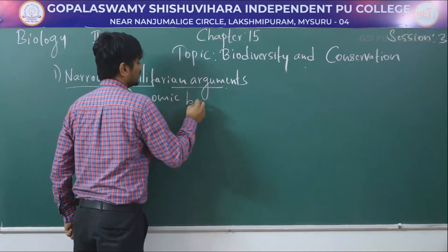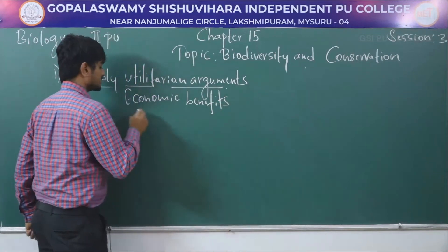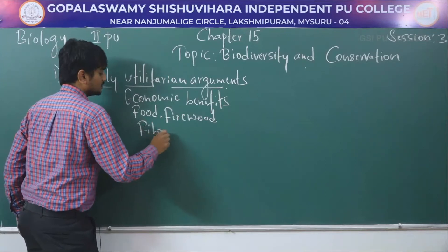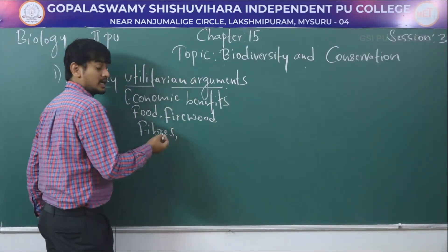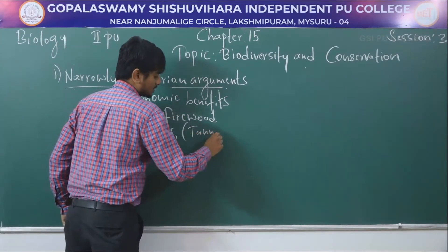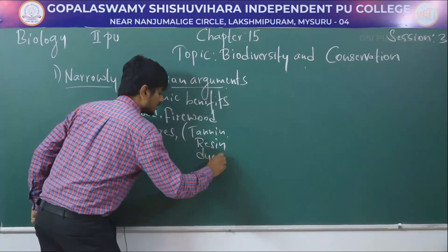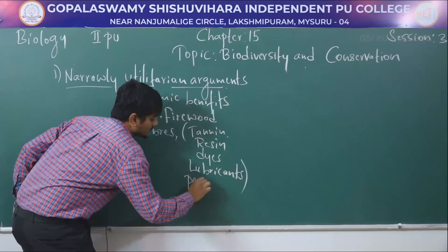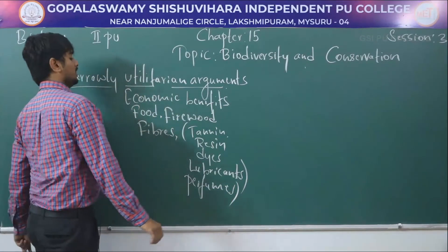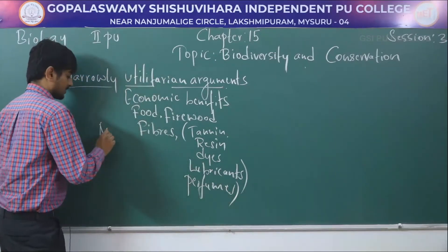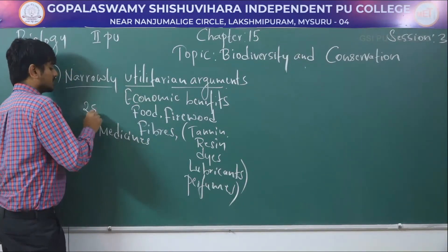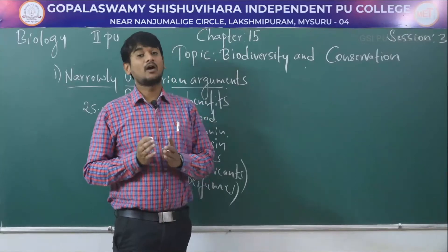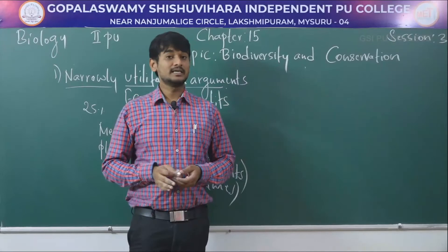Humans derive economic benefits from nature as food, firewood, fibers, construction materials, and industrial products like tannins, resins, dyes, lubricants, and perfumes. These are all industrial products. And medicines — 25 percent of the medicines are obtained from plants only, and nearly 25,000 plants have medicinal value. This is all about narrowly utilitarian arguments.